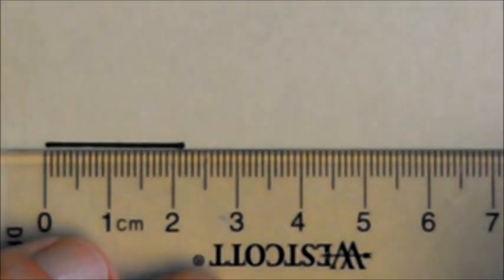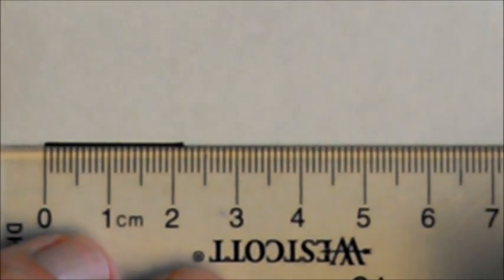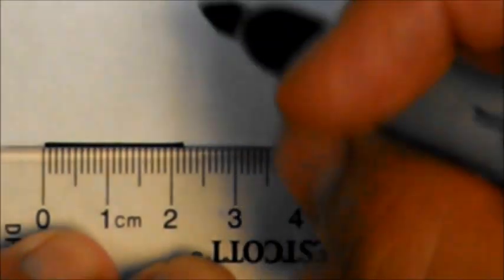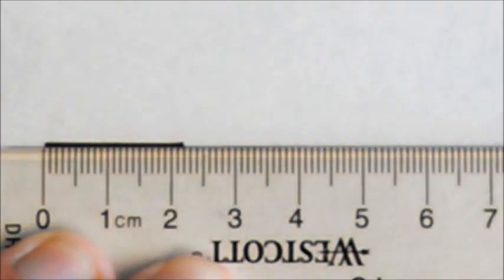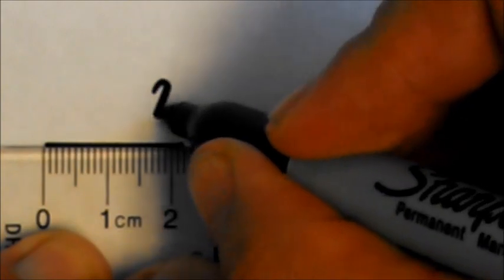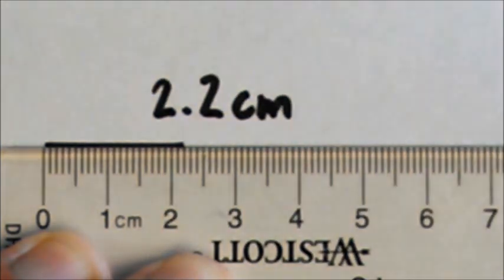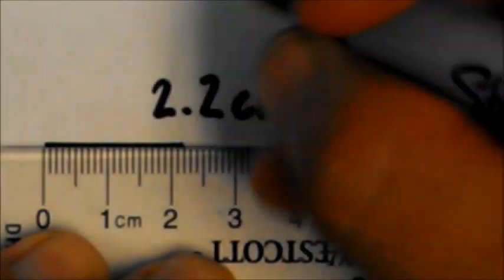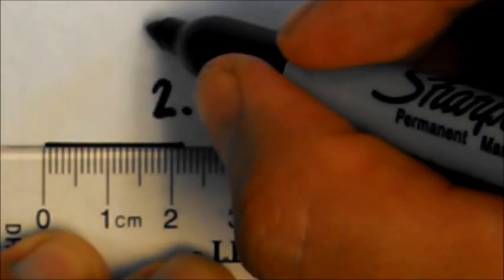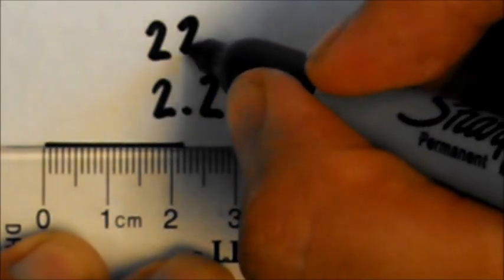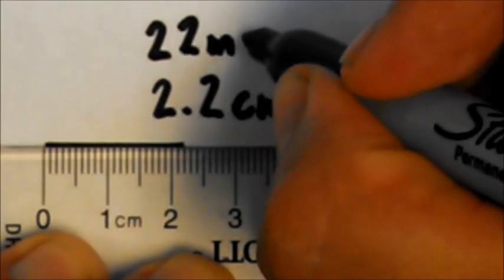Now this one, we are going to say it's 2.2, 2.2 centimeters. How many millimeters is that? We just move that decimal over one place. That's 22 millimeters.